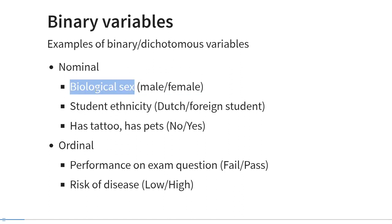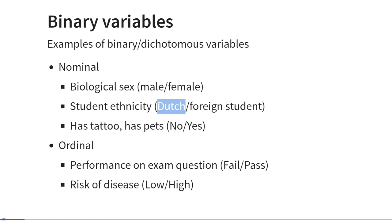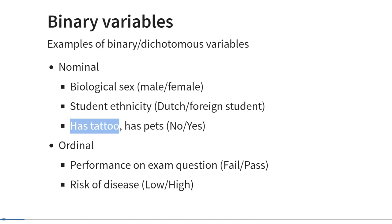Of course, biological sex is not the same as gender, which is a social construct, and there is also some variability in biological sex characteristics, but nonetheless this is a distinction that is often made. Another nominal binary variable could be student ethnicity. We are based in the Netherlands, so one category could be Dutch and another category could be composed of students with any other nationalities, distinguishing between Dutch and foreign students. Another example could be whether someone has a tattoo or not, or has pets or not — both yes/no type variables.